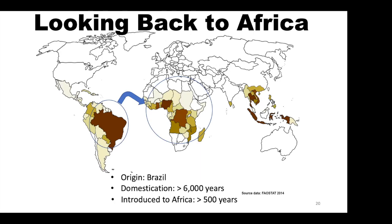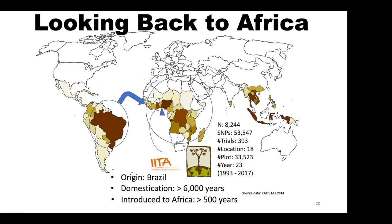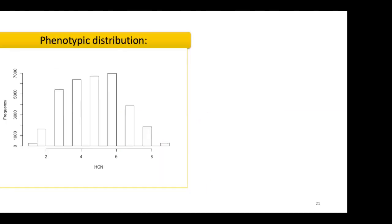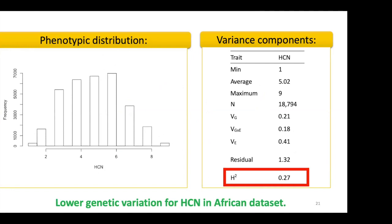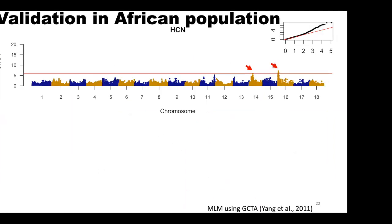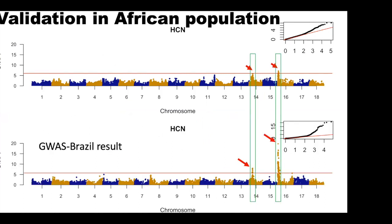The idea was to learn from Brazil and then apply that knowledge to Africa. We went to CassavaBase and found about 393 trials conducted across 23 years, which we used for GWAS. We estimated the genetic distribution, variance, and heritability — and observed that genetic variation is low in this dataset. However, with the GWAS analysis, we also found two peaks, one on chromosome 14 and one on chromosome 16, which properly align with the previous Brazilian dataset. It is safe to say that, at least based on this dataset, the genetic architecture is conserved.